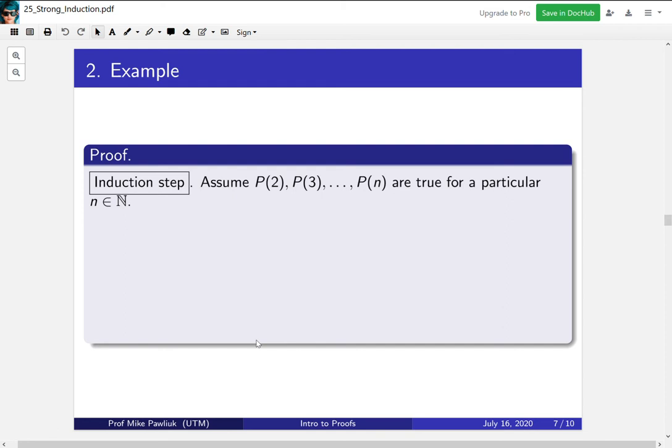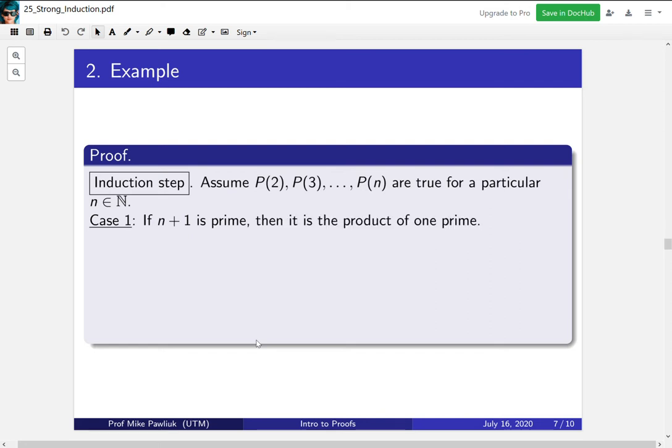Now the induction step. So assume P(2), P(3), all the way up to P(n) are true for a particular natural number n. Now here we're going to have to break it up into cases. If n plus 1 is prime, how do we write it as a product of primes? Well, there's nothing much to do. It's already the product of 1 prime. So that's it.